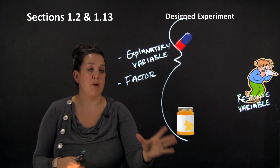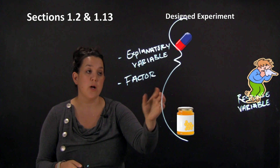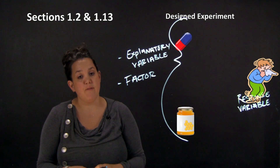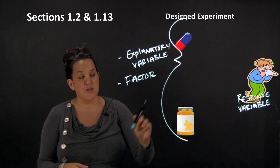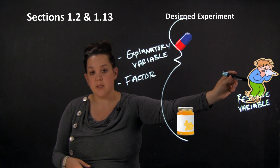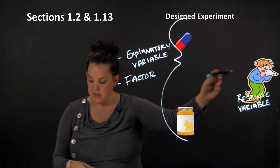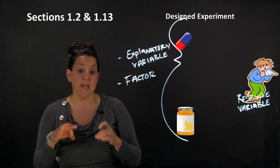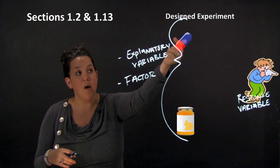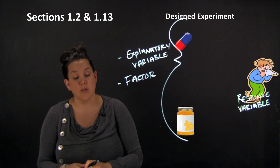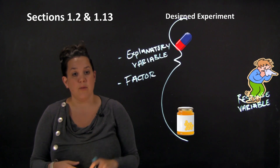In a designed experiment, you are assigning people to an explanatory variable or a factor. There are different levels within your factor variable — the type of pill or honey. You're then seeing if that affects the response variable, which is allergy symptoms. The treatment is the singular one — so you could have the treatment of honey or the treatment of pills. Those are the options, or levels, within the factor.